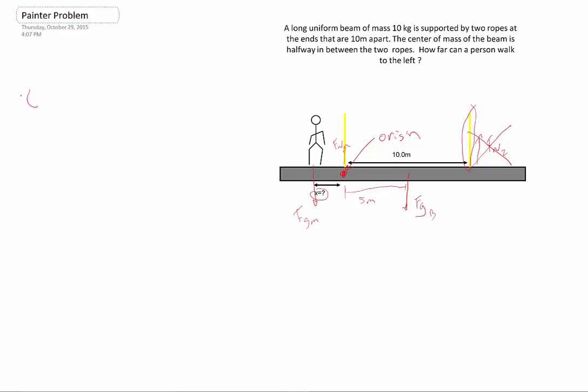So it turns out this is going to be really easy. Our sum of torques is just going to give us the distance r of the person times the force of gravity of the person. And then we're also going to have the distance of the beam, basically the center of mass of the beam, the force of gravity of the beam.